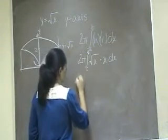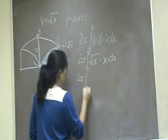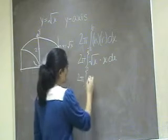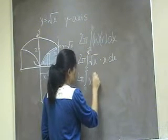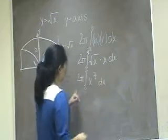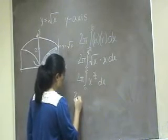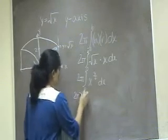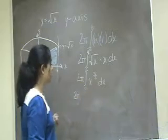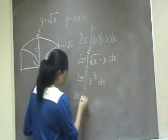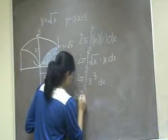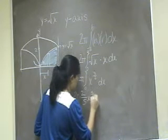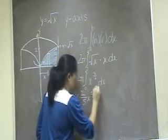So we can go ahead and simplify this a little further and write 2π times the integral from 0 to 4 of x to the 3 halves dx. Now we can go ahead and integrate this. Taking the integral gives us 2π times 2 fifths x to the 5 halves, evaluated from 0 to 4.